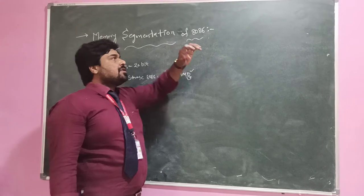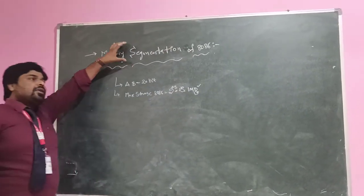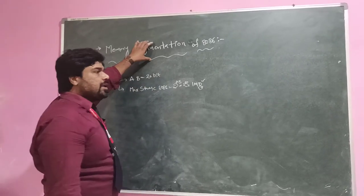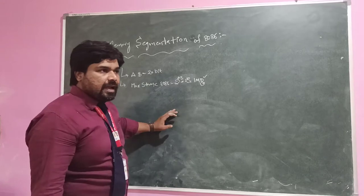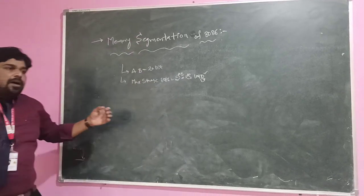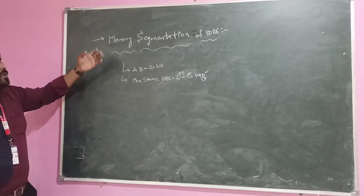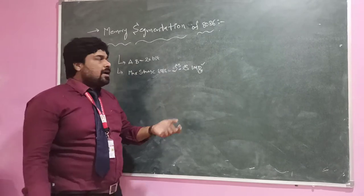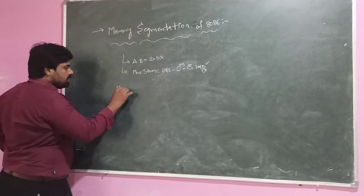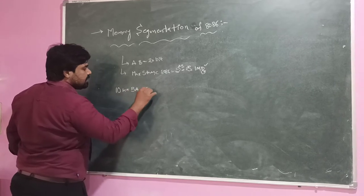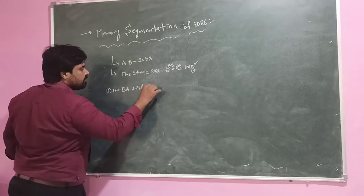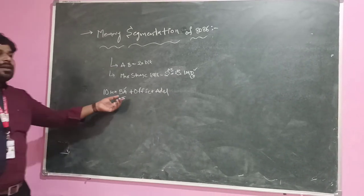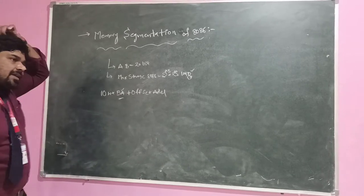The basic idea behind memory segmentation is to calculate the 20-bit physical address. We cannot store the 20-bit address in 16-bit registers. By using memory segmentation, we calculate the 20-bit physical address using the formula: 10H into base address plus offset address. This base address is stored in the segment registers.